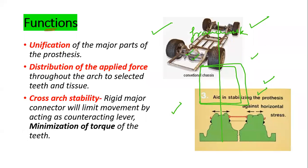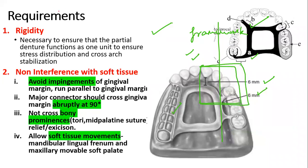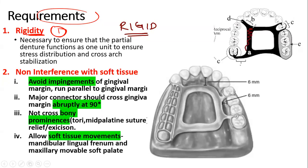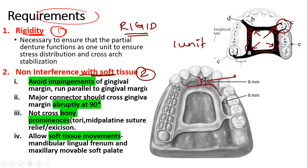We had studied about its functions: unification, distribution of applied force, and cross-arch stability. For maxillary major connectors, you need to know the requirements. The first and foremost requirement is that it should be rigid — the whole maxillary major connector has to act as one unit, and the stress has to be equally distributed. If it does not, it makes the abutment teeth periodontally weak. The second requirement was no interference with soft tissue.